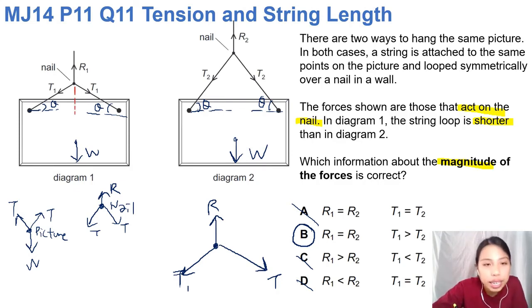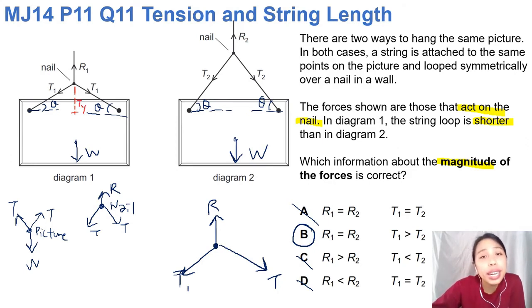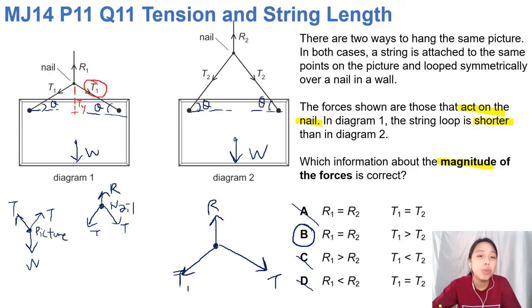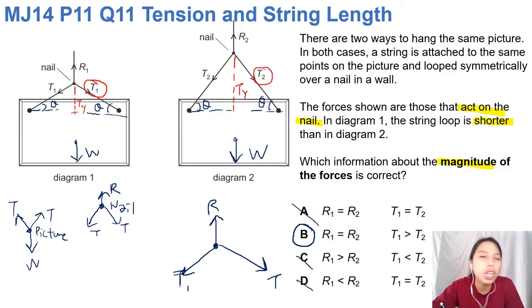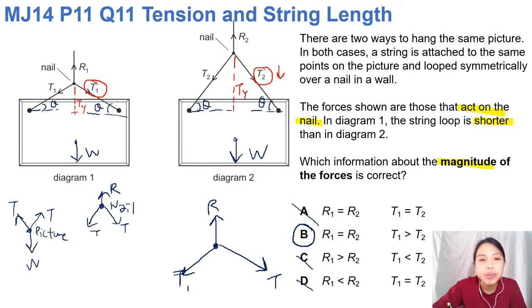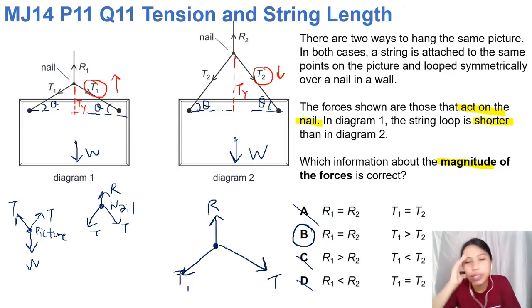In the first picture, the two strings have a very small vertical component — the red line represents the vertical component Ty. To compensate for that small vertical component, the tension has to be quite high. But in the other setup, the string is much more vertical and has a much larger vertical component, so the tension does not need to be so high. Therefore this tension is smaller and the first one is bigger. Let's look at the simulation to understand this better.